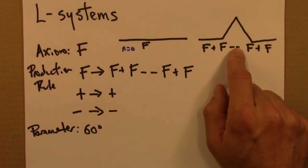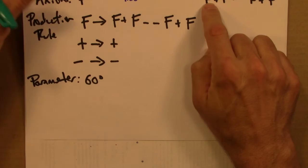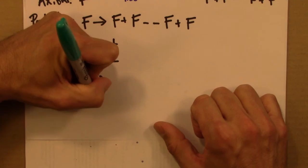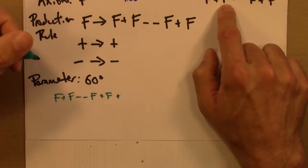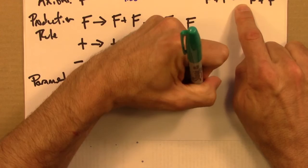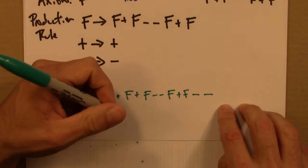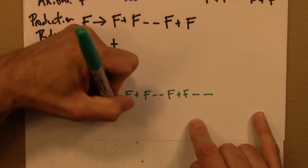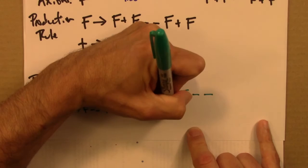Let's write that out. This F gets replaced with F plus F minus minus F plus F. That plus stays put. This F gets replaced by this whole expression, F plus F minus minus F plus F. Minus minus stay alone, and then F plus F is going to be the same as this.